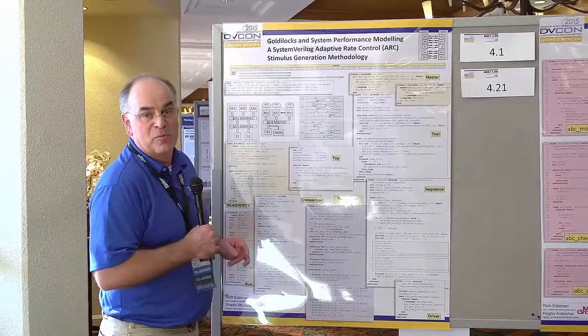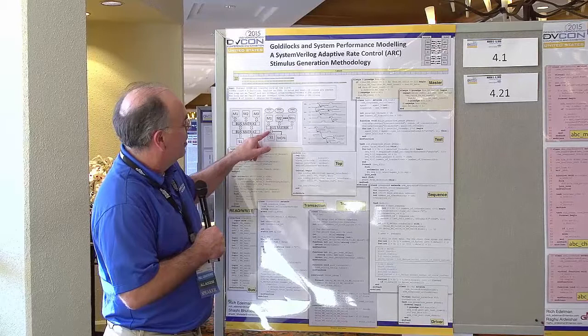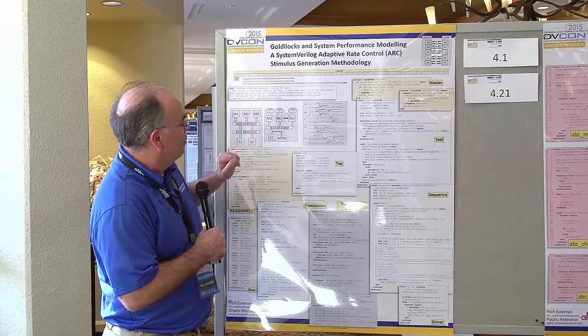Our goal in this paper is to build a system, create stimulus, and monitor the bandwidth down here at a slave and keep that bandwidth constant. So we're looking to keep it about 300 megabytes per second out of the 400 megabytes that are available.